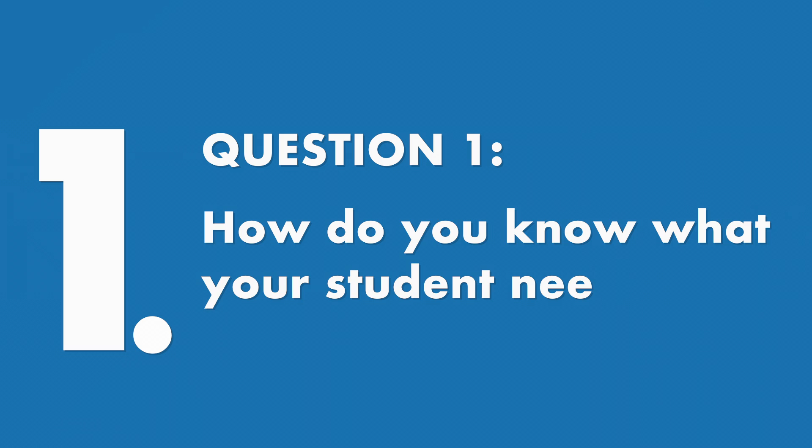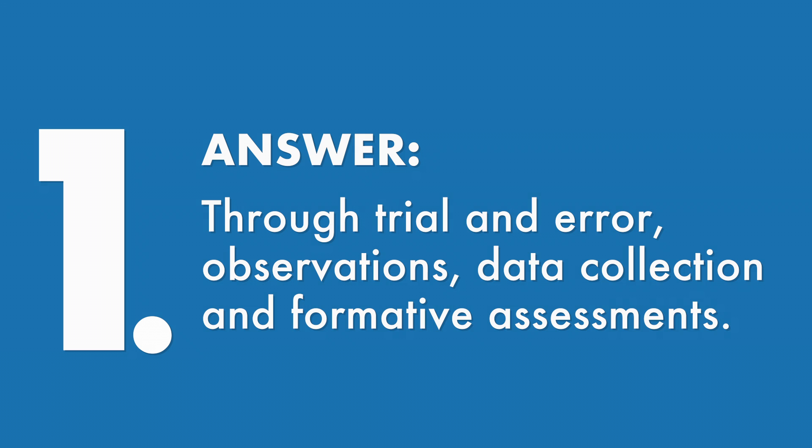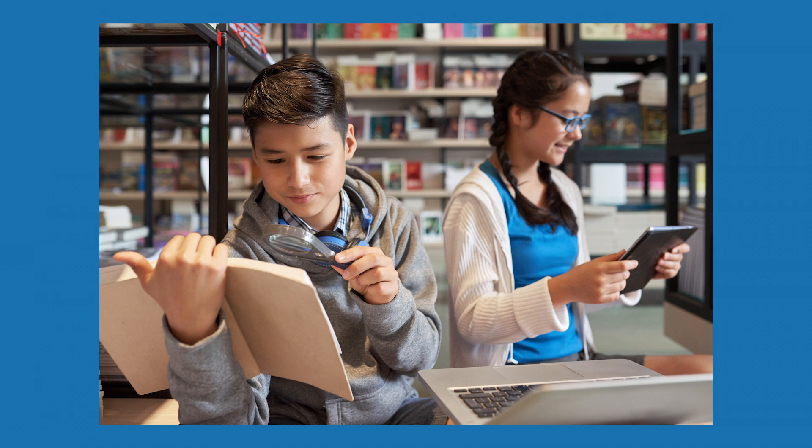Now that sounds like three questions to me. Let's break it down. First, you asked how do you know what the student needs? Through trial and error, observations, data collections, and formative assessments. You know if the student regularly benefits from using an accessibility feature. Here's a reminder of the accessibility features.